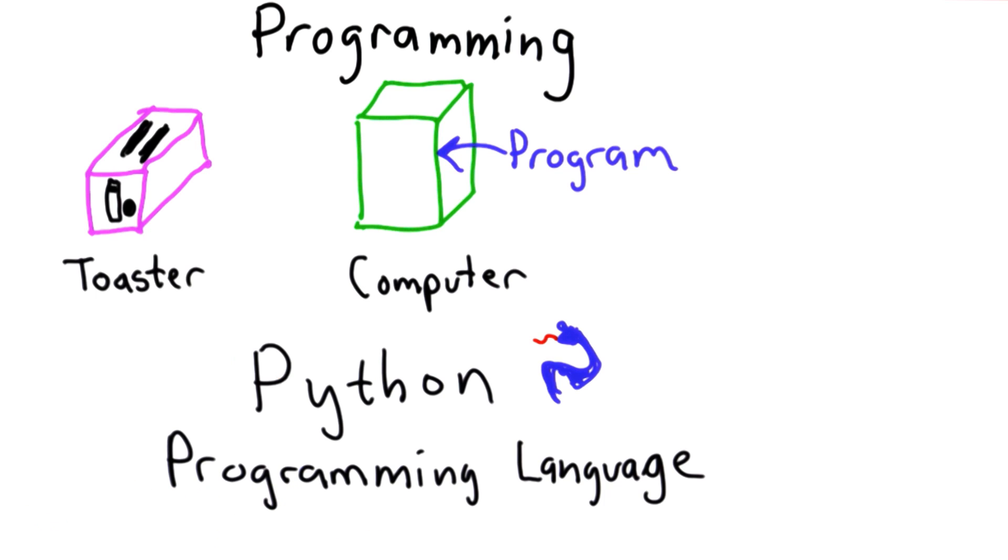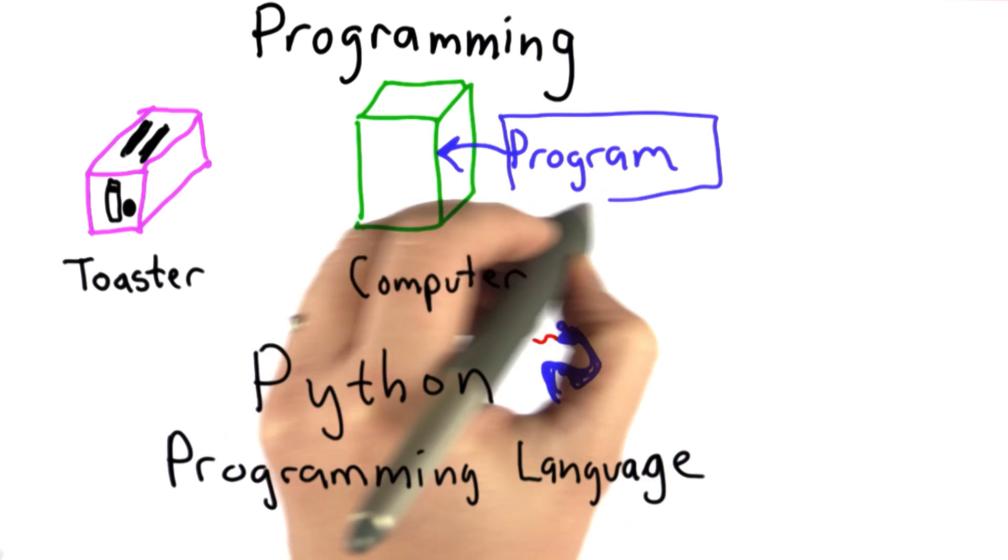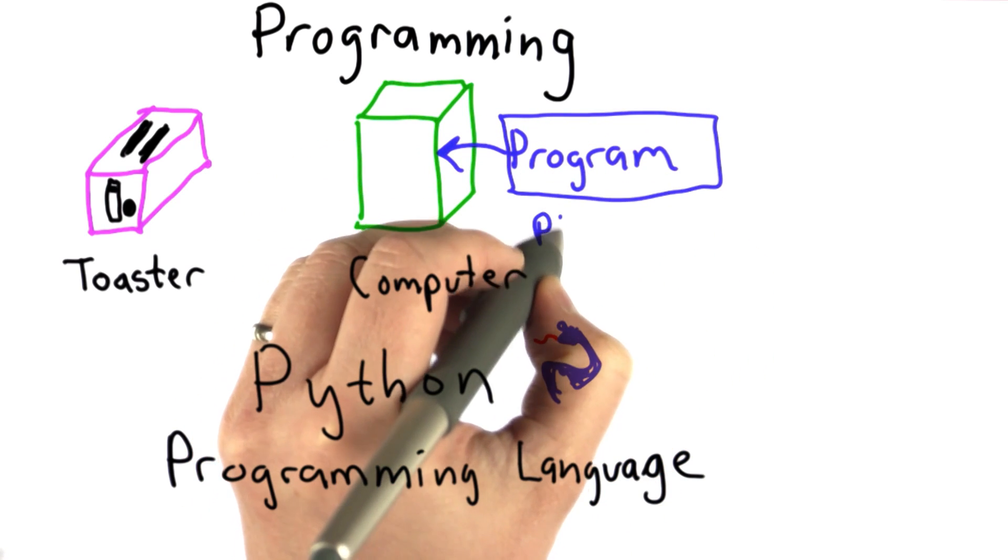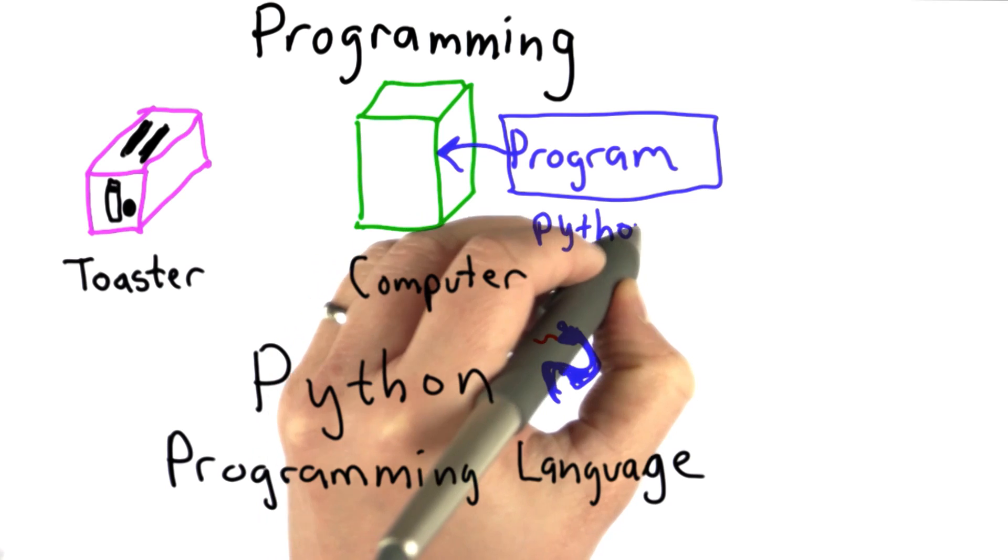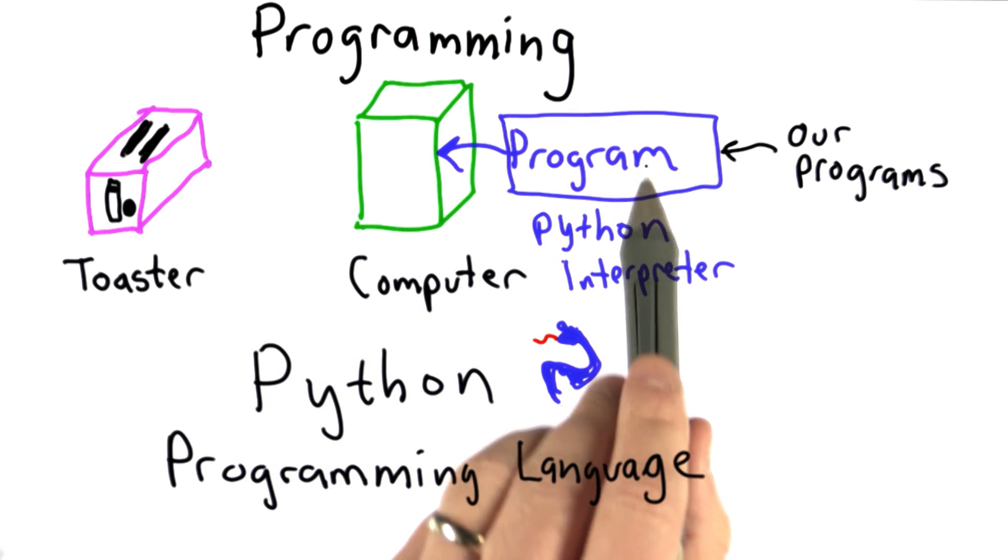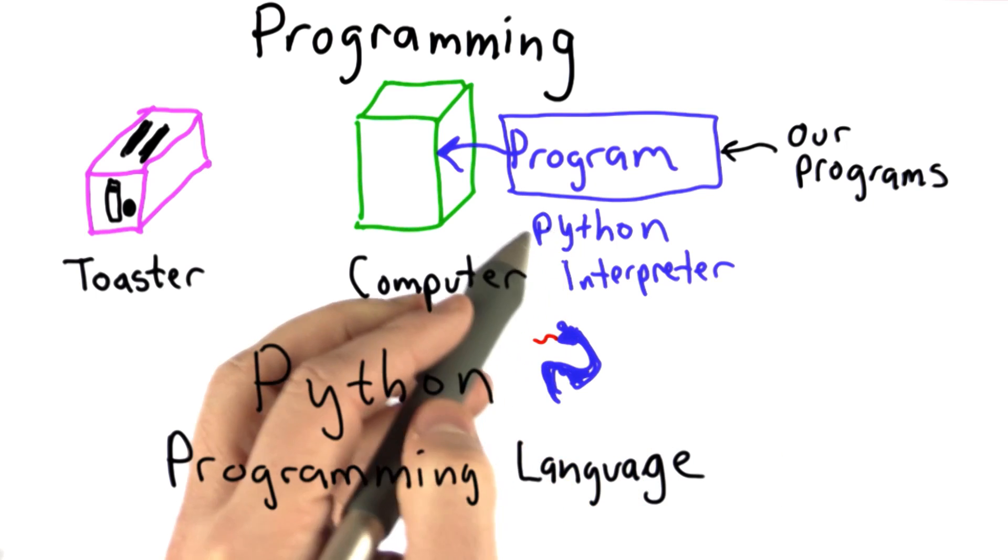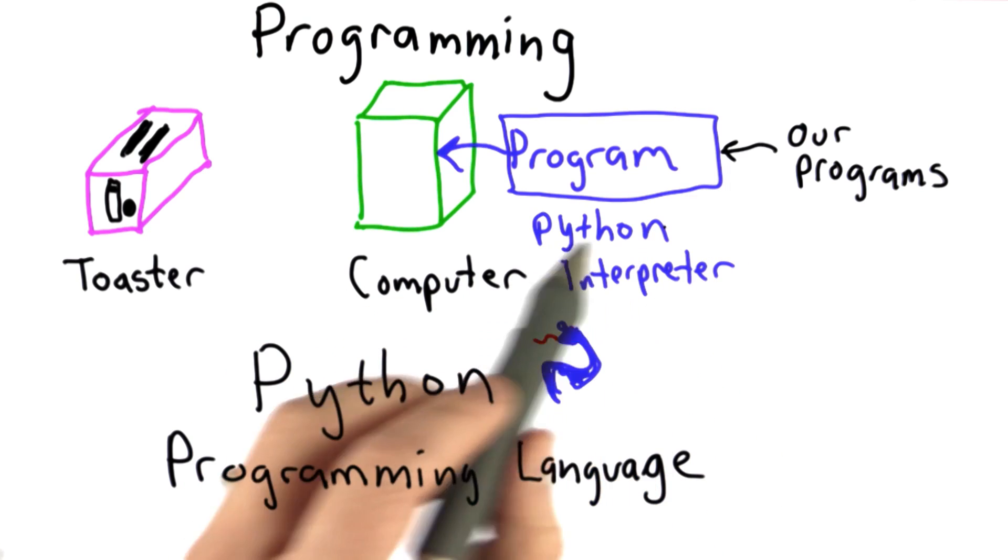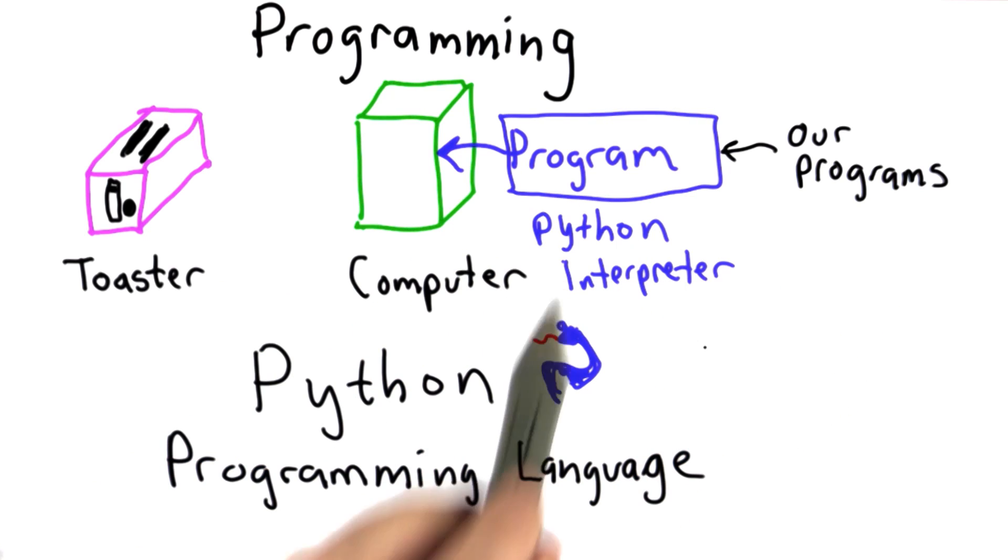That means instead of our program running directly on the computer, the programs that we write will be the input to the Python program, which runs on the computer. What Python is, is called an interpreter. It runs our programs, interprets them, executes the program that we wrote in the Python language by running a program in the language that the computer can understand directly.